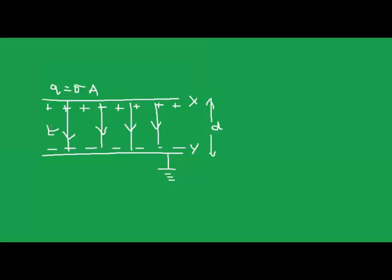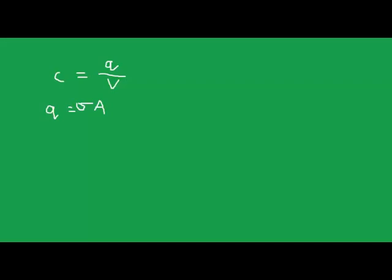Now let me explain how to find the capacitance C of this capacitor. We know that capacitance C equals Q over V, and Q equals sigma times A. We also know that the electric field E is equal to the negative gradient of potential, so to find the potential V we need to integrate.